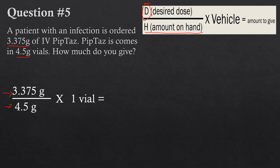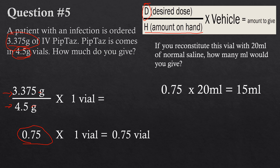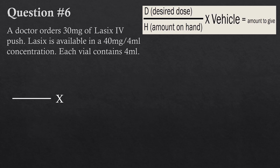Solving: 3.375 grams divided by 4.5 grams — grams cancel — gives 0.75. Multiplied by one vial gives 0.75 vials. How do you actually draw that up? Piptaz is typically reconstituted with 20 mL of normal saline. If you put 20 mL in and you want 75% of the vial — 0.75 multiplied by 20 — that gives you 15 mL. So you draw out 15 mL, put it in your IV bag, and run it through the patient.